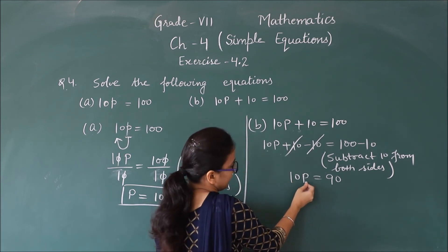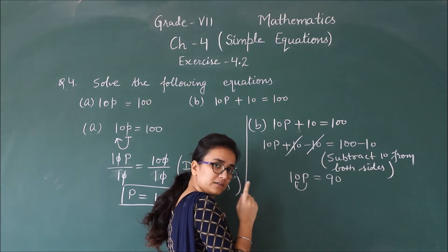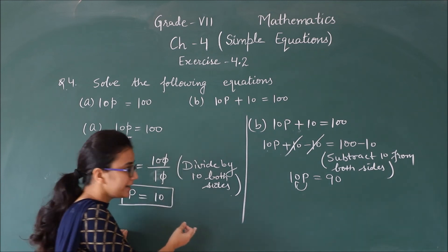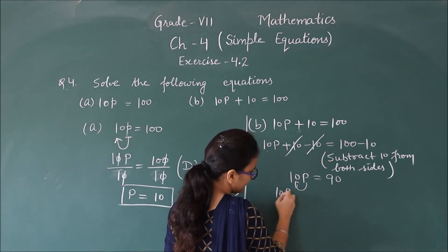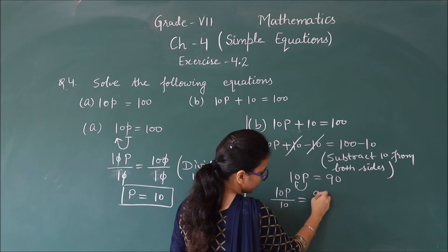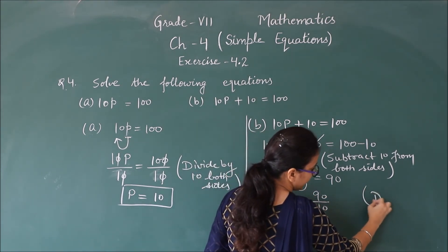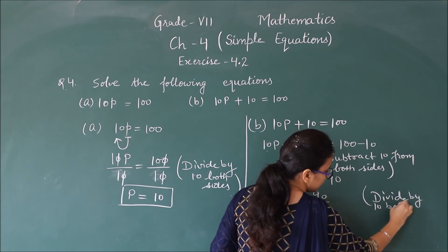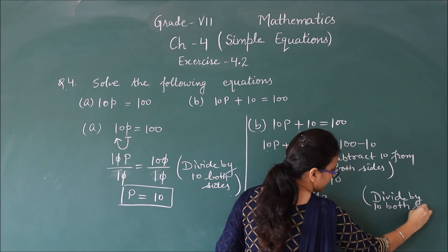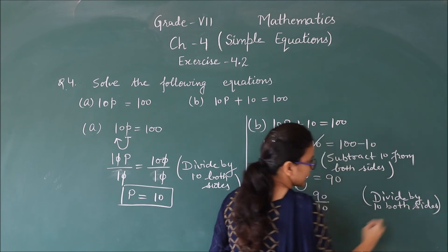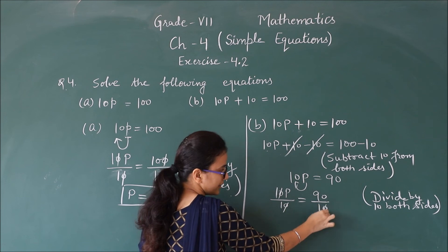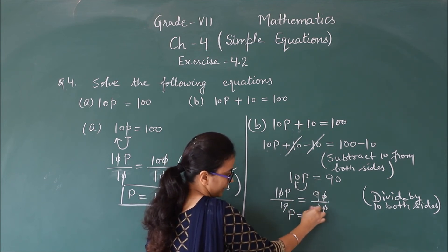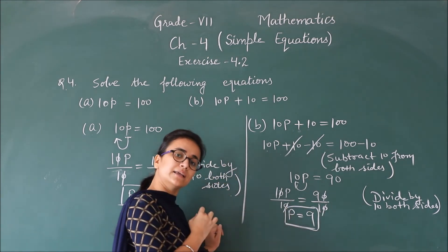Now look, with this p, 10 is multiplied. Then what do we need to do? As we did in first part, divide by 10. Same here. 10p divided by 10 equals 90 divided by 10. Divide by 10 both sides. Clear? Here how much? Cancel. Here 10 and 10 cancel. Here remains p, and here 9. So the value of p I got is 9.